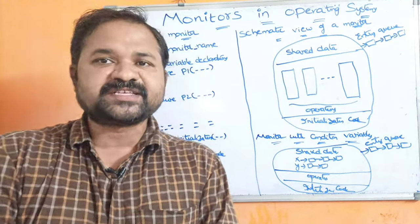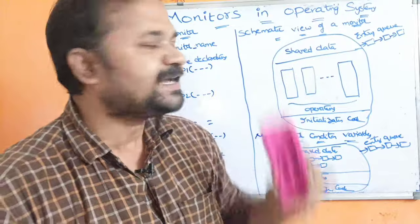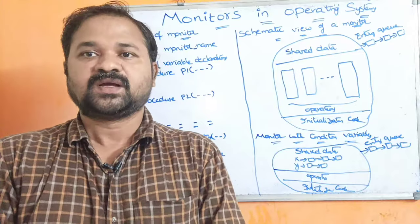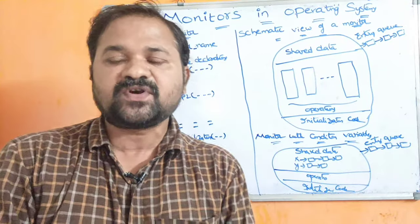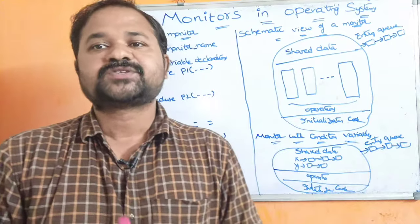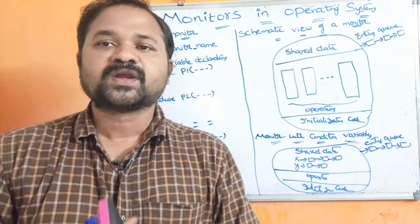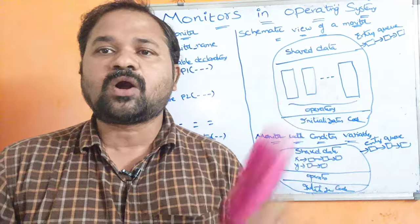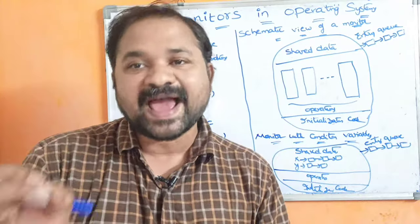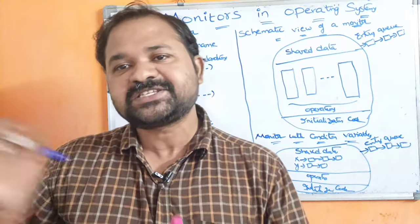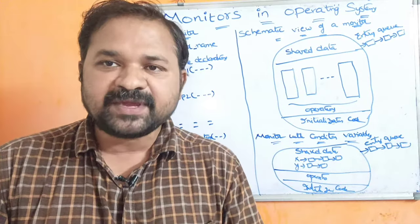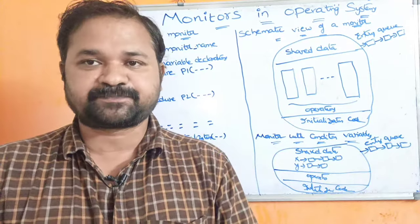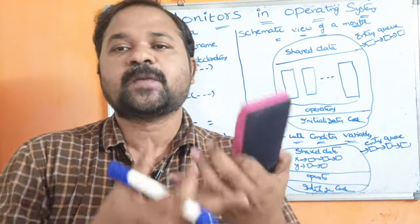In this video, we are going to discuss about monitors in operating systems. Monitors are an alternative to semaphores. We know that semaphores are mainly useful for implementing process synchronization. Likewise, monitors are also useful in order to implement process synchronization. Monitors are provided by programming languages, not by the operating system. For example, Java supports monitors, whereas C language does not support monitors.